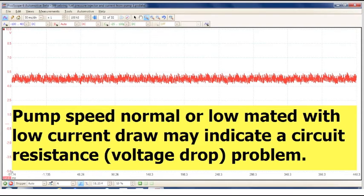Once in a while you'll see a low current draw mated with a normal or low pump speed. This could generally indicate that there's a voltage drop or excessive resistance in the fuel pump circuit. Time to pull out your multimeter and do a few pinpoint tests.